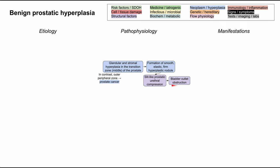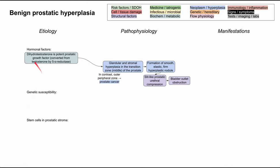Before we get into the manifestations of bladder outlet obstruction, let's talk about the etiologies — why there's growth in the middle transition zone of the prostate. The etiologies can be broken down into three big categories: hormonal factors, genetic susceptibility, and stem cells in this area. Dihydrotestosterone is a potent prostatic growth factor, converted from testosterone by an enzyme called 5-alpha reductase, and it leads to prostatic growth.